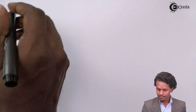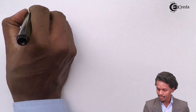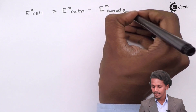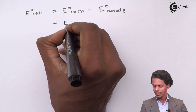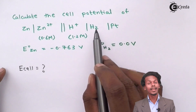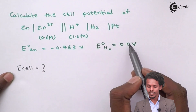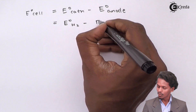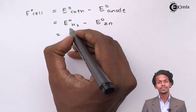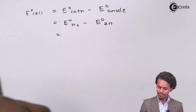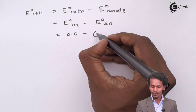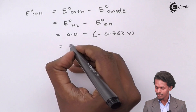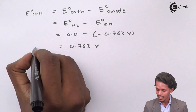The formula is E°_cell = E°_cathode − E°_anode. The cathode is the hydrogen electrode with E°(H₂) = 0.0 V, and the anode is zinc with E°(Zn) = −0.763 V. So E°_cell = 0.0 − (−0.763) = 0.763 V.